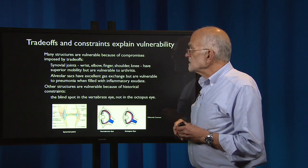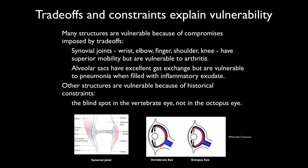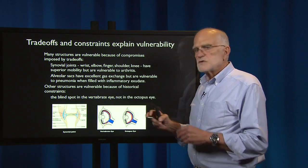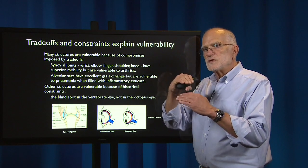Other structures are vulnerable because of historical constraints. One of the classic ones is the blind spot in the vertebrate eye. Here is a vertebrate eye contrasted with an octopus eye — the red is the retina, the photosensitive cells. The octopus has the retina lining the cup of the eye with the nerve fibers behind it, whereas the vertebrate eye has the nerve fibers lining the cup with the retina behind it, and the nerve fibers have to go through the retina at some point to get to the brain — that is the blind spot. This difference has persisted for about 500 million years, and probably has to do with a developmental constraint on the relationship of inducing tissues.